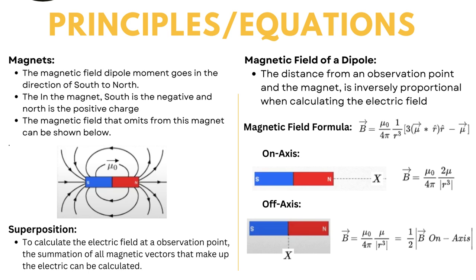Now the magnetic field—we're going to be looking at on-axis points and off-axis. We just need to know that the on-axis is going to be in the direction of the magnetic dipole moment, and when it's off-axis, it's going to be the opposite direction as well as half of the on-axis magnetic field.